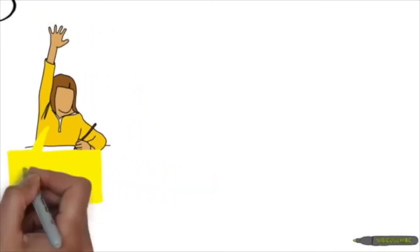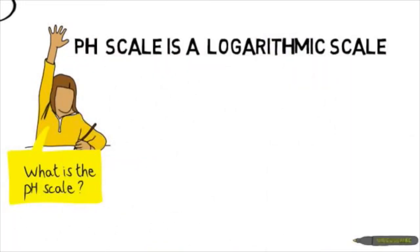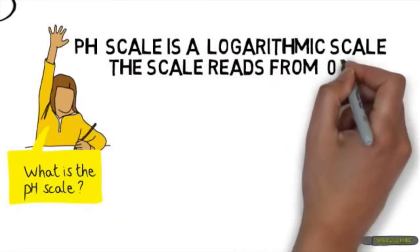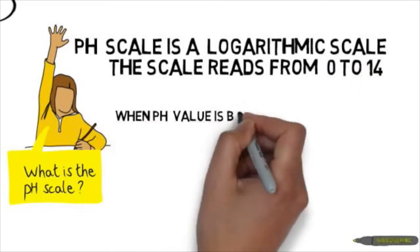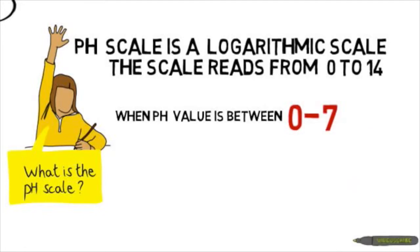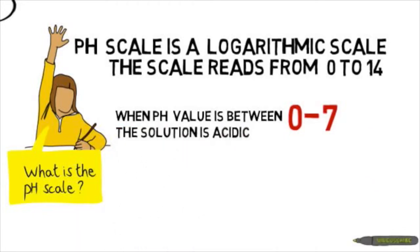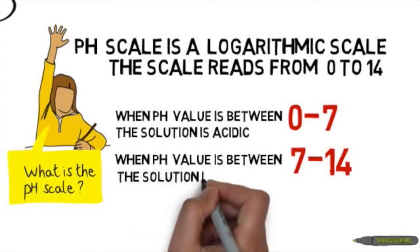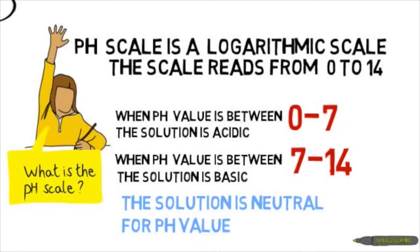What is the pH scale? The pH scale is a logarithmic scale that reads from 0 to 14. When the pH value is between 0 and 7, the solution is acidic and contains more hydrogen ions. When the pH value is between 7 and 14, the solution is basic and contains less hydrogen ions. The solution is neutral at a pH value of 7.